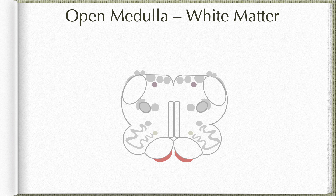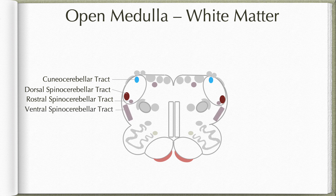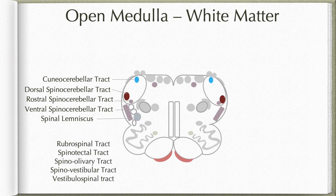Coming to the white matter present in the open medulla, the dorsal spinocerebellar tract will have already joined with the inferior cerebellar peduncle at this level, as will the cuneocerebellar tract, which will have started from the accessory cuneate nucleus. The rostral spinocerebellar tract will also have joined the inferior cerebellar peduncle. However, the ventral spinocerebellar tract will still be along the lateral margin of the open medulla. The anterior spinothalamic tract fibers will have joined with the medial lemniscus, whereas the lateral spinothalamic tract will be known as the spinal lemniscus from here upwards. The rest of the ascending and descending tracts of the spinal cord will all be present in the lateral tegmentum.